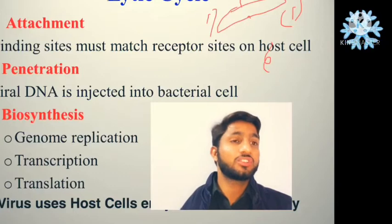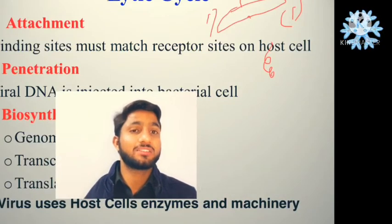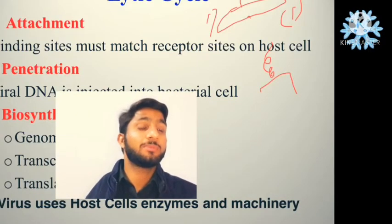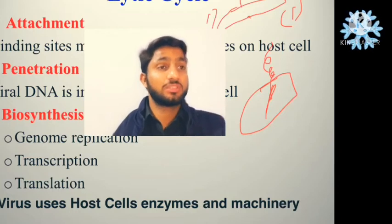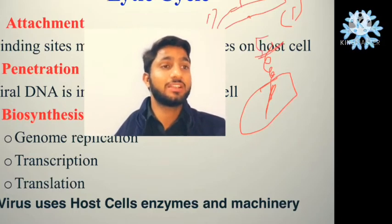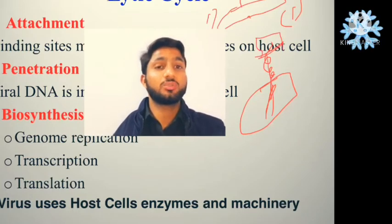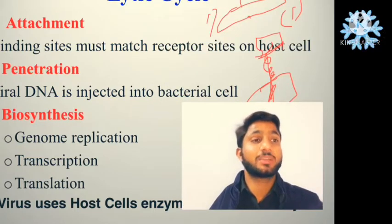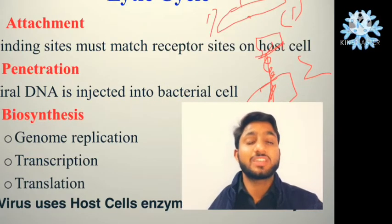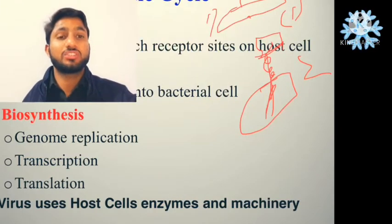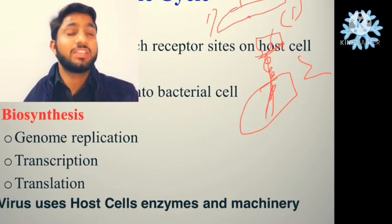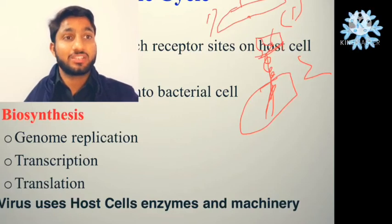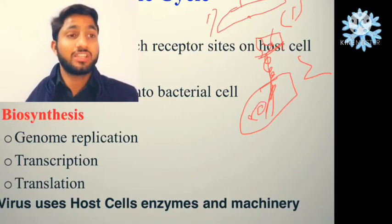The second step is penetration. The viral genome — whether it is a helical virus or another type — is injected or shifted into the bacteria. The third step is biosynthesis, which involves genome replication, transcription, and translation. The viral DNA or RNA gets access to the bacterial synthetic machinery.